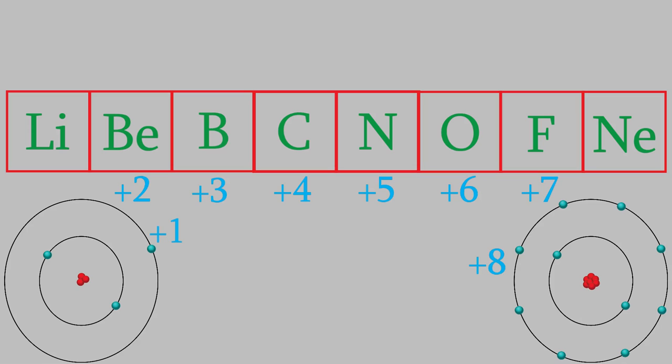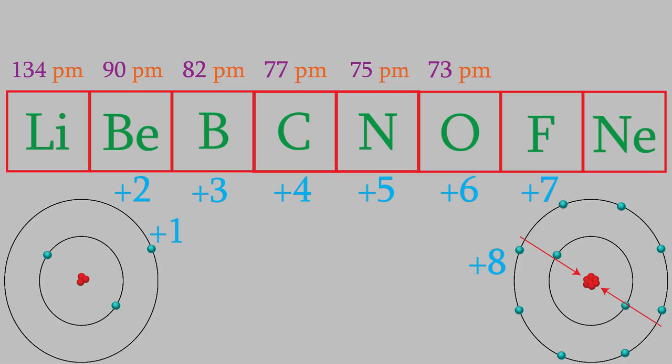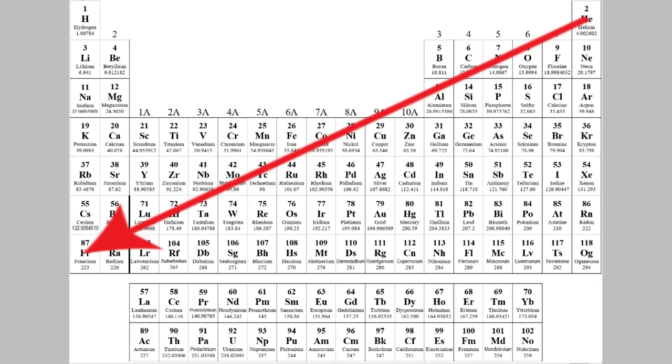So how does that affect the radius? Well, the more the nucleus pulls on the valence electrons, the closer those electrons move to the nucleus. So the atom is smaller the more the nucleus pulls on the electrons. So neon, which feels a strong pull from the nucleus, is smaller than lithium. Lithium has a radius of 134 picometers, and the radius decreases to 69 picometers as we go to the right. So the atomic radius is higher as we go to the left on the periodic table and as we go down.